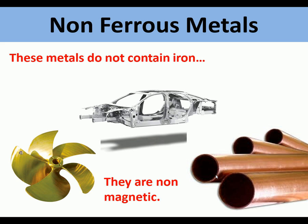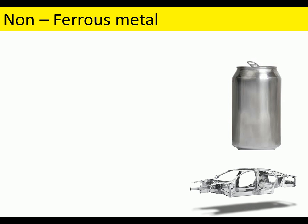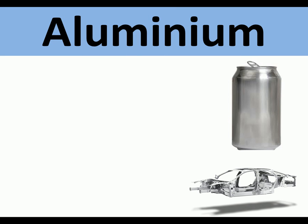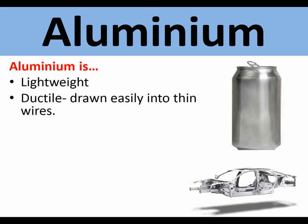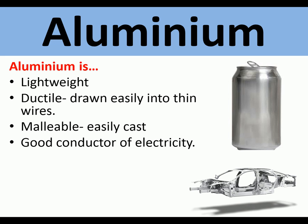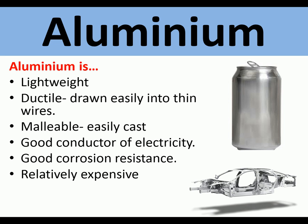Non-ferrous metals do not contain iron and are not magnetic. Aluminium is lightweight, ductile — meaning it can be easily drawn into thin wires or shaped — and malleable. It is also easily cast, a good conductor of electricity, and has good corrosion resistance as it forms an oxide barrier. It is more expensive than mild steel, but easily recyclable.